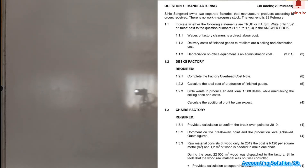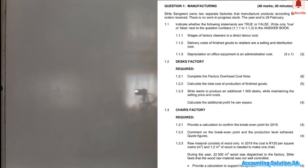Number one: they said wages of factory cleaners is a direct labor cost — true or false? It's false. Direct labor workers are directly involved in production; they don't do cleaning. Cleaning is a factory overhead.